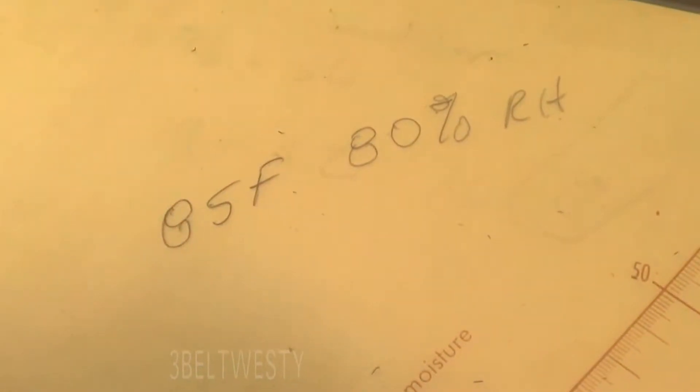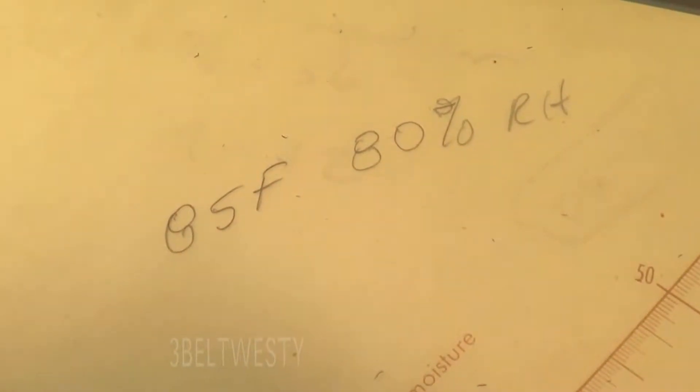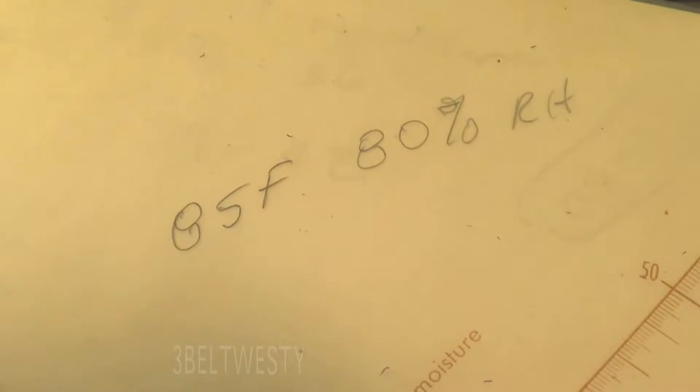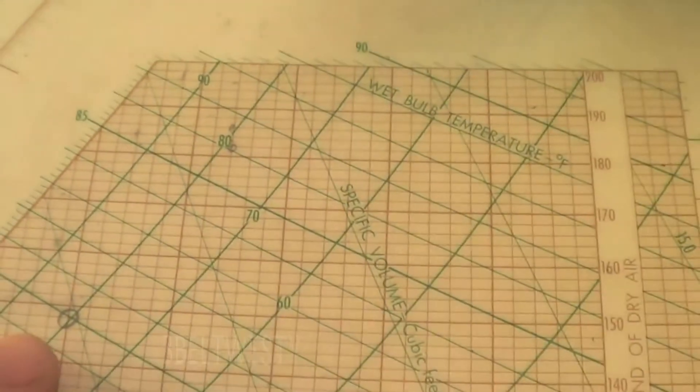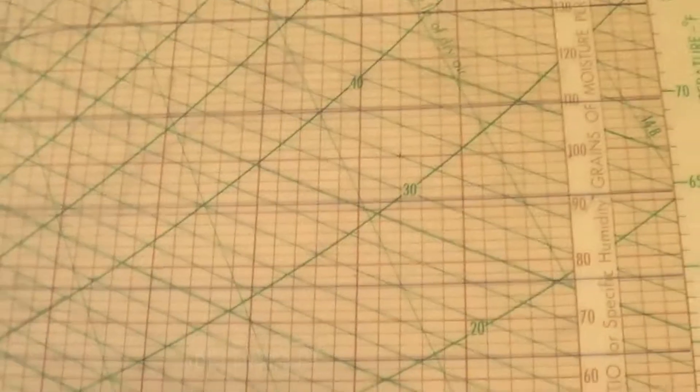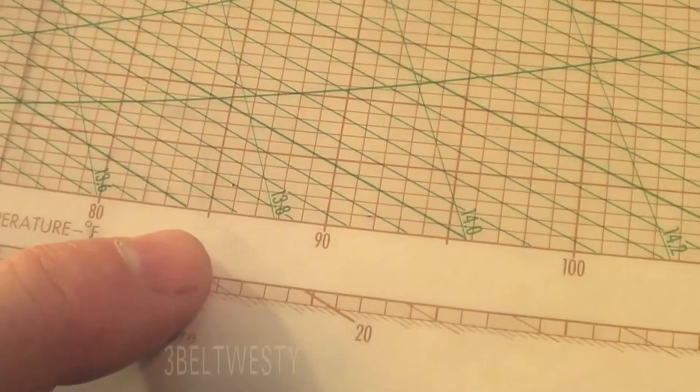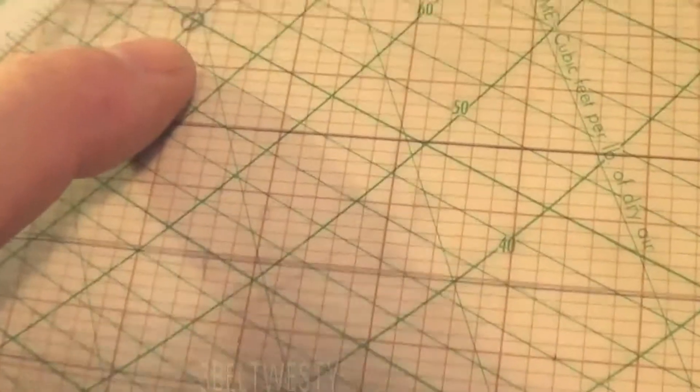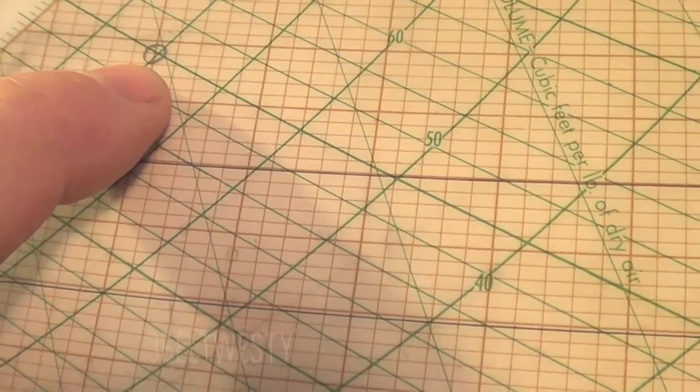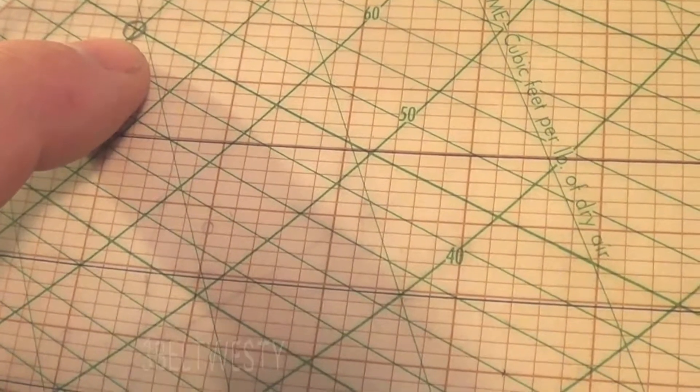Here's a typical condition later in the day in the deep south. It might be 85 degrees F, 80% RH relative humidity. On the psychrometric chart here, you've got 85 dry bulb. Extend the line up here and here's the 80% humidity.